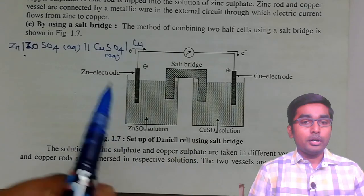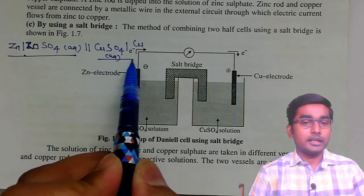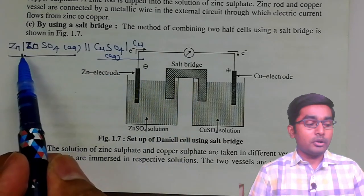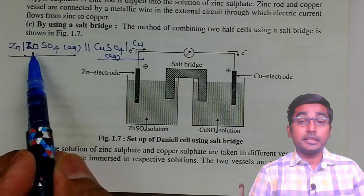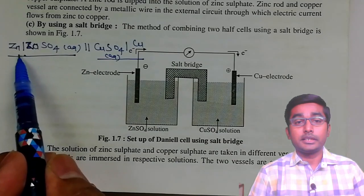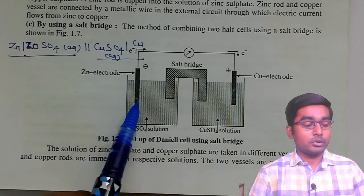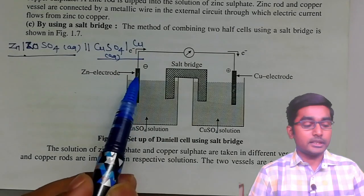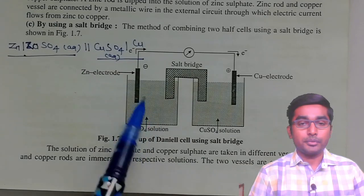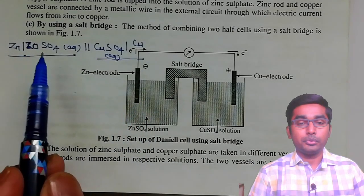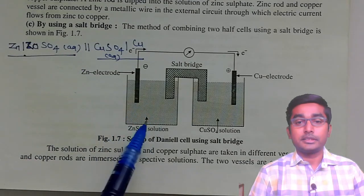This is the left side of our cell representation and this is the right side. The single vertical line shows that the zinc electrode is dipped in zinc sulfate solution. The electrode consists of a metal rod which conducts electricity. This electrode is dipped in zinc sulfate solution. The word 'aqueous' shows that we have the zinc sulfate liquid solution which contains zinc ions and sulfate ions.